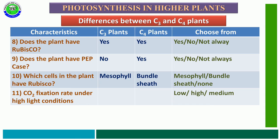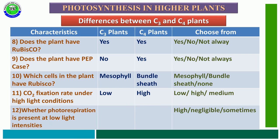The eleventh characteristic feature is the CO2 fixation rate under high light conditions. The given options are low, high, or medium. In C3 plants, the CO2 fixation rate under high light conditions is very low, but in C4 plants it is high.